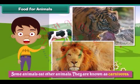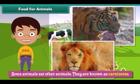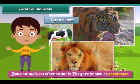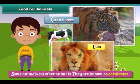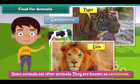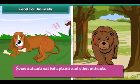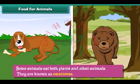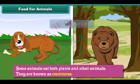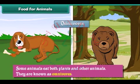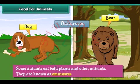Some animals eat other animals — they are known as carnivores. Examples of carnivores are lions, tigers etc. Some animals eat both plants and other animals — they are known as omnivores. Examples of omnivores are bears, dogs etc.